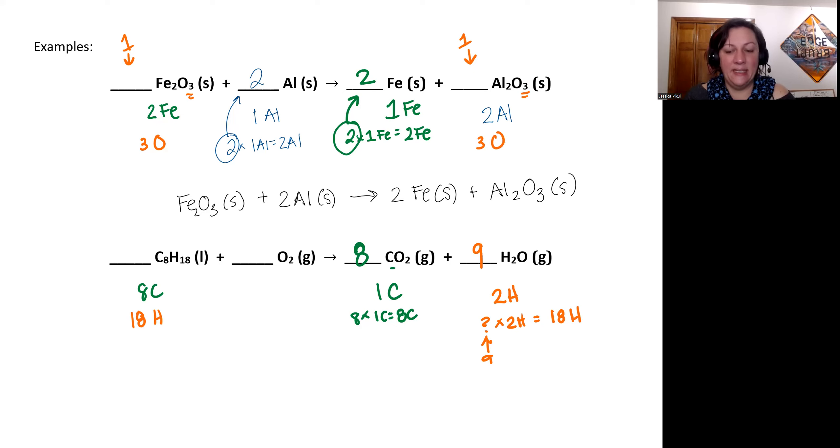So I'll put that coefficient up by my water. And again, that nine affects the number of hydrogen I have. Now instead of two I have 18. It also affects the number of oxygens that I have. So now that I have all of my more straightforward elements balanced, the carbon and the hydrogen, now I'll work on the oxygen.